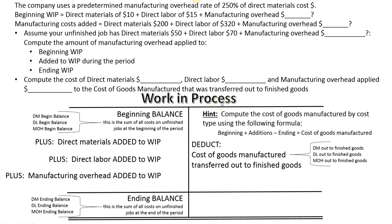The work in process account is an asset account. That means when we have more of this asset, we'll record left-handed entries known as debits. And when we complete inventory — when we complete these jobs in process — we will record a right-handed entry and push those costs out. It will be called the cost of goods manufactured, and that amount will go in as a left-handed entry to finished goods. So when you finish jobs, you will credit work in process and debit finished goods.